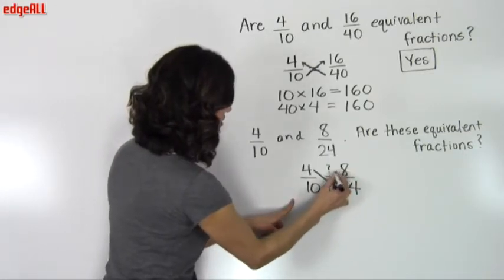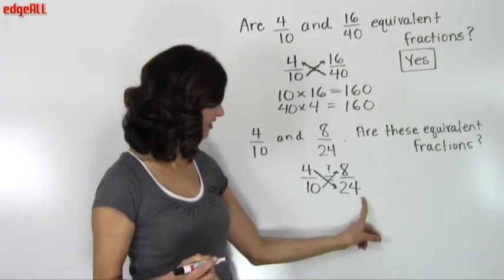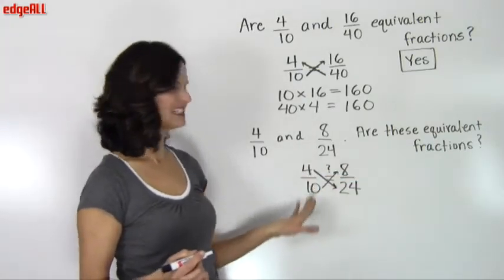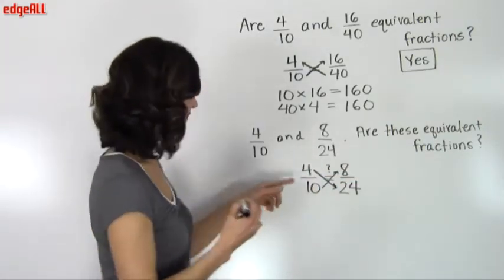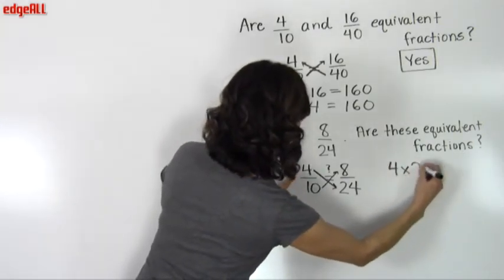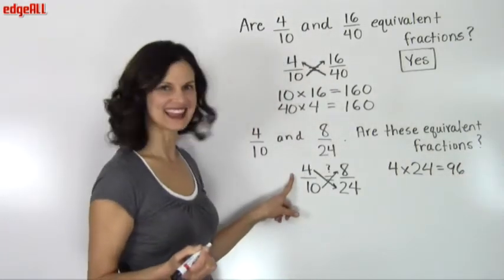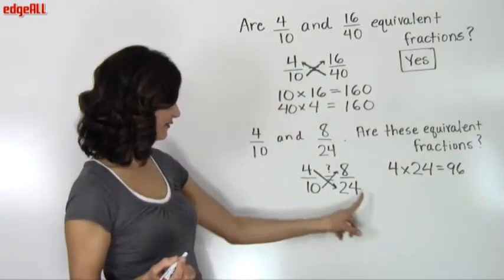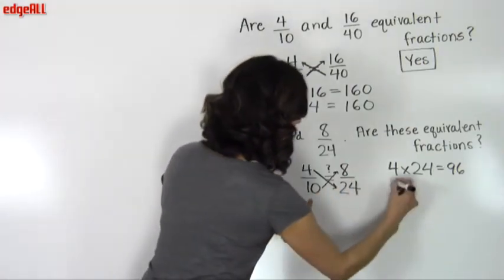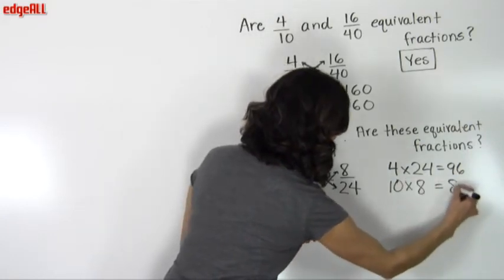So I want to make sure that I multiply the numerator of one times the denominator of the other and then vice versa, the numerator of the other times the denominator of the other. So I have two calculations here that I need to do: 4 times 24 which equals 96 and then let's see about the other one. So I did 4 times 24 which is 96 but now I'm going to do 10 times 8 which we know is not equal to 96. 10 times 8 equals 80.